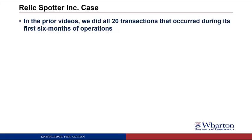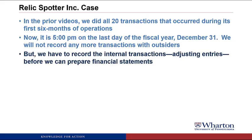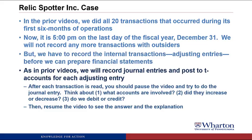In prior videos, we did all 20 transactions that occurred during RelicSpotter's first six months of operations. Now it's 5 p.m. on the last day of the fiscal year, December 31st. We're not going to record any more transactions with outsiders. But before we put together the financial statements, we have to record the internal transactions or adjusting entries. I want to try to record the journal entry and post a T-account for each required adjusting entry, and I'll put up the pause sign so you can try the journal entry yourself before I reveal the answer.